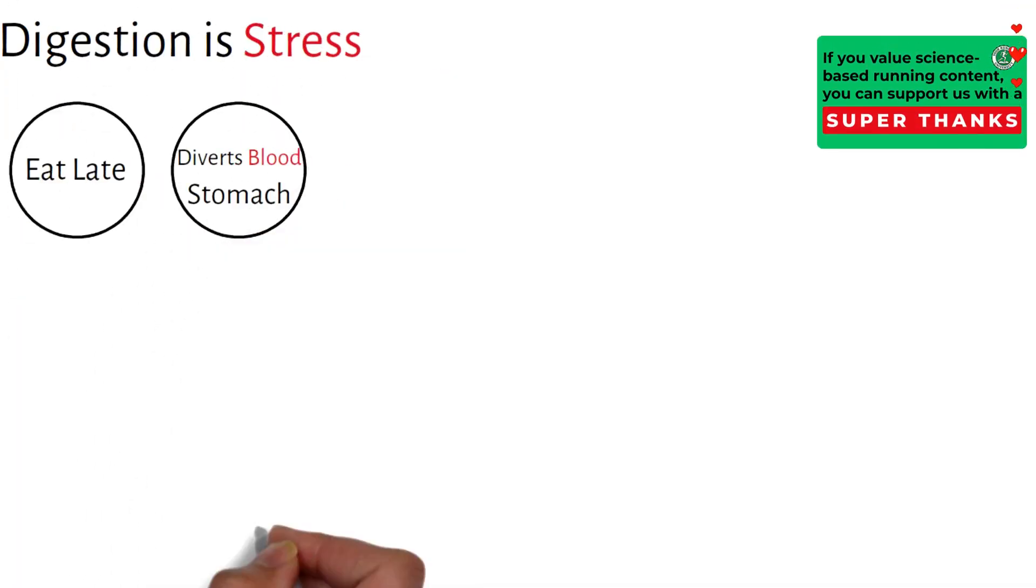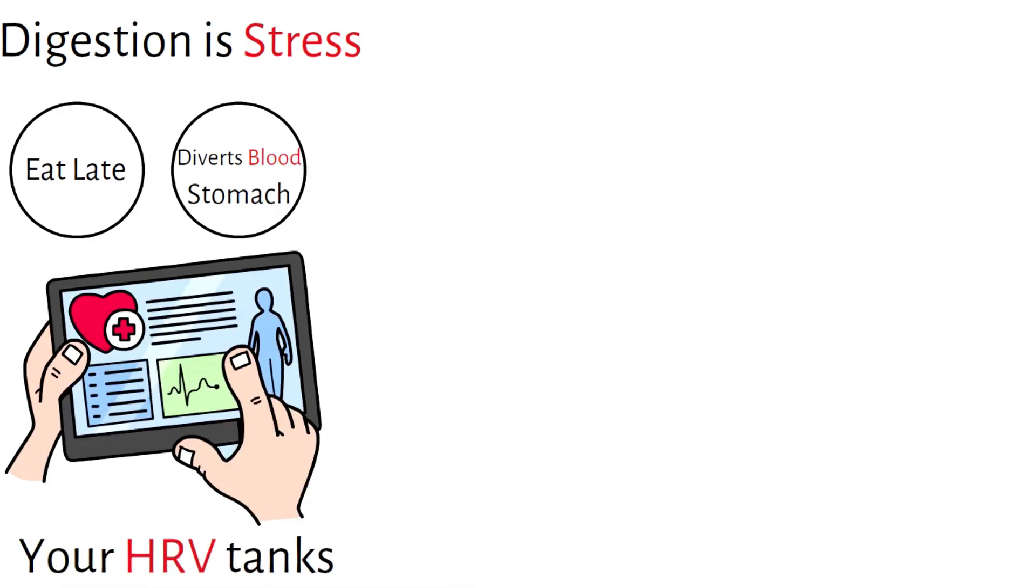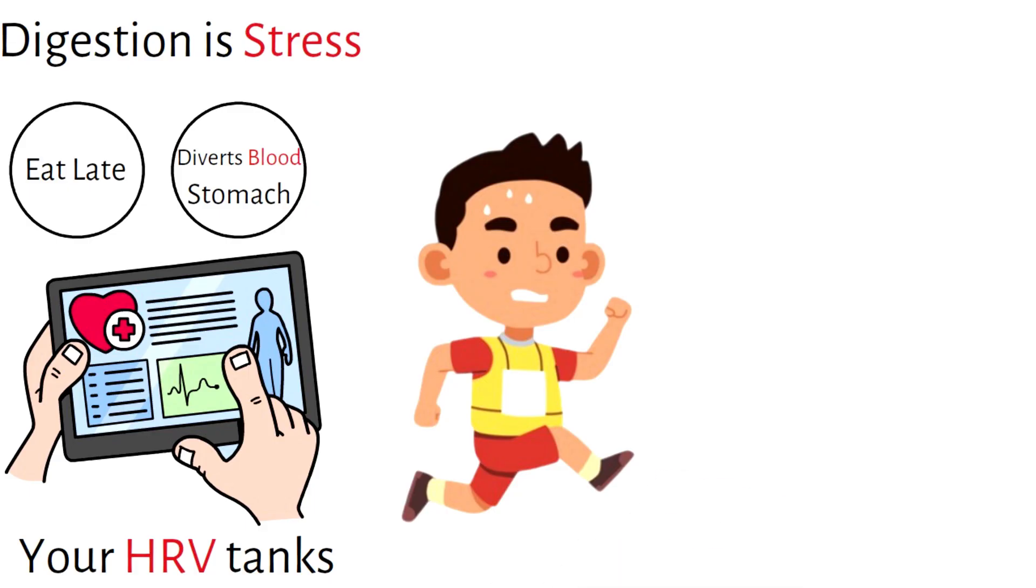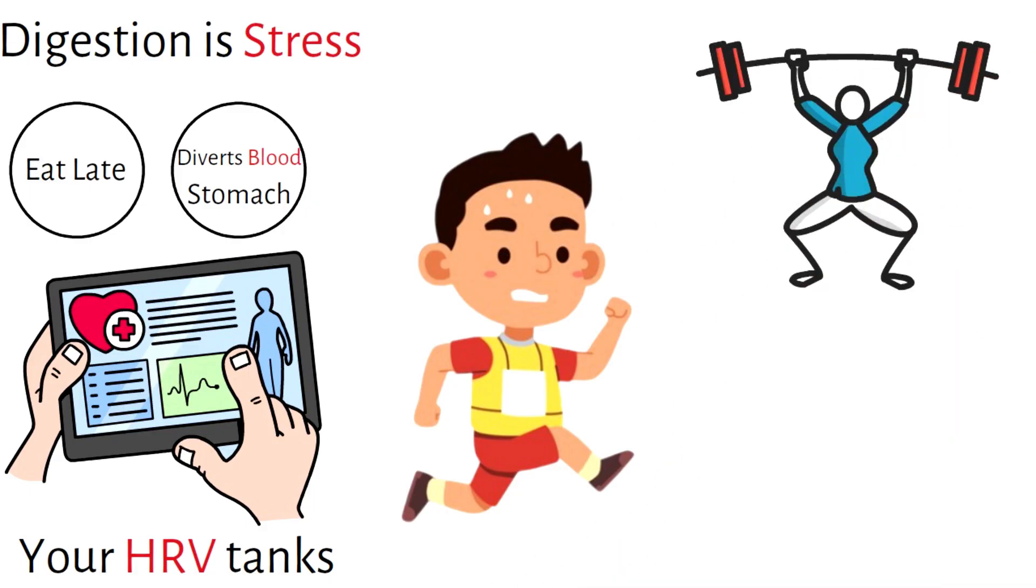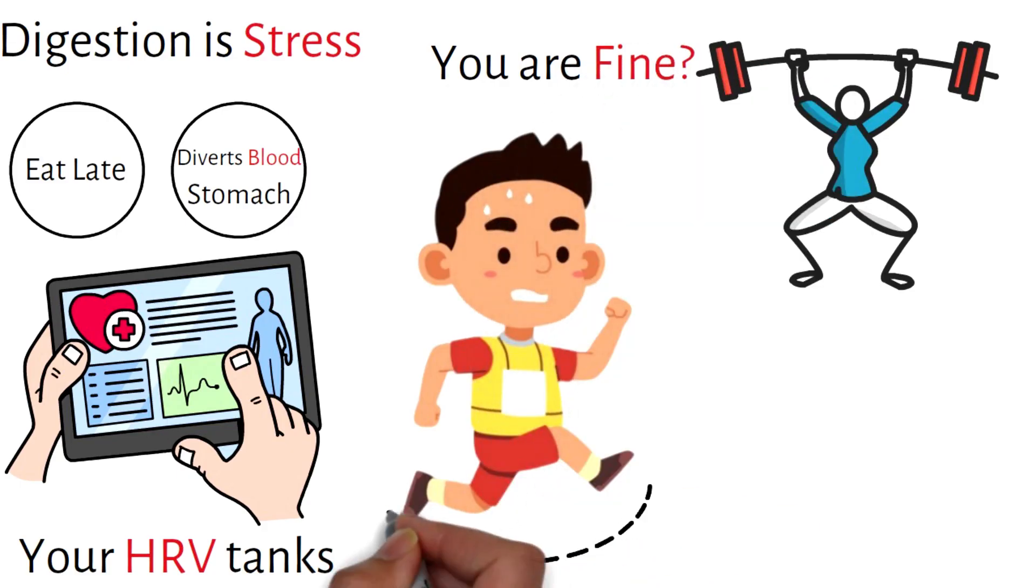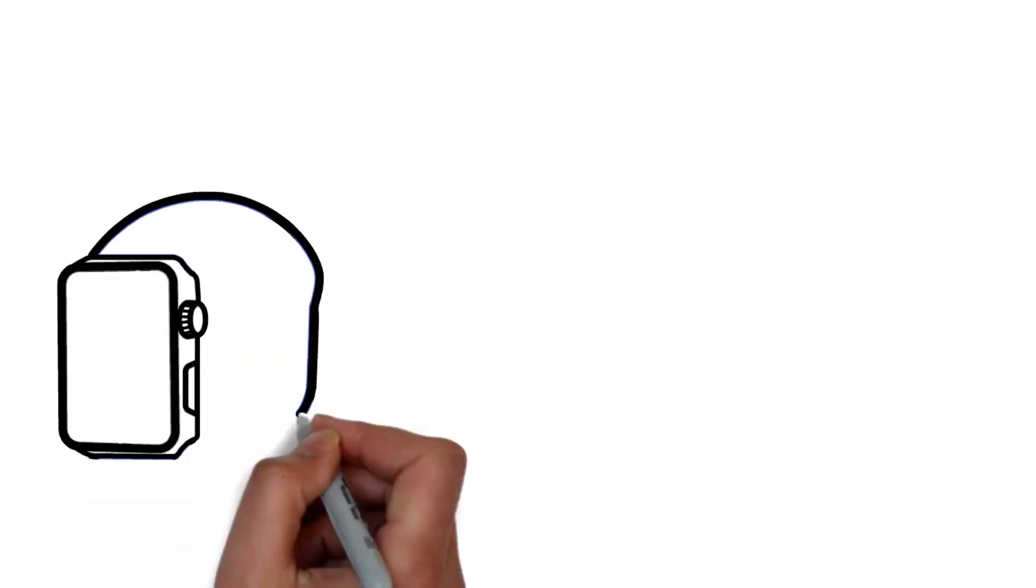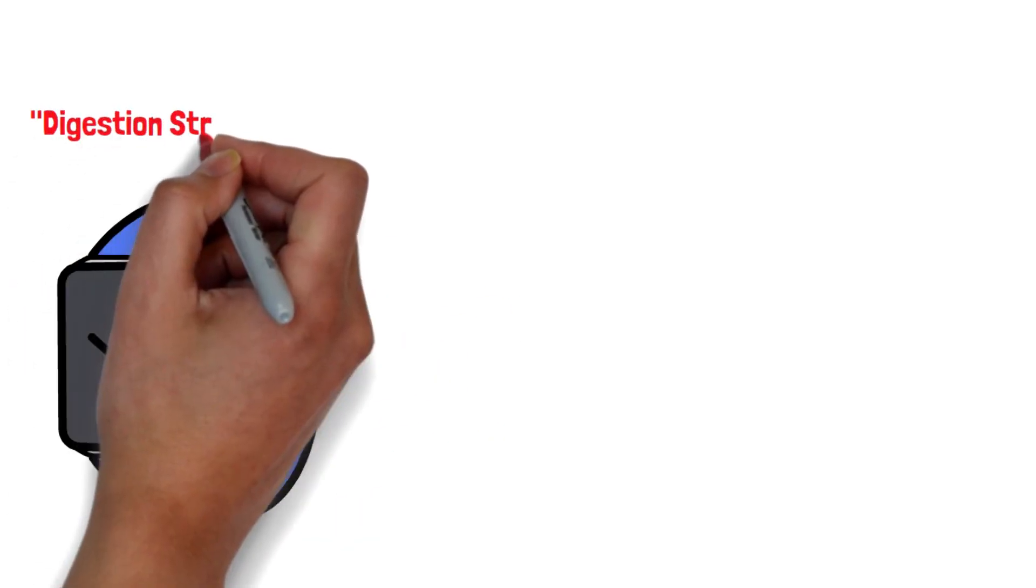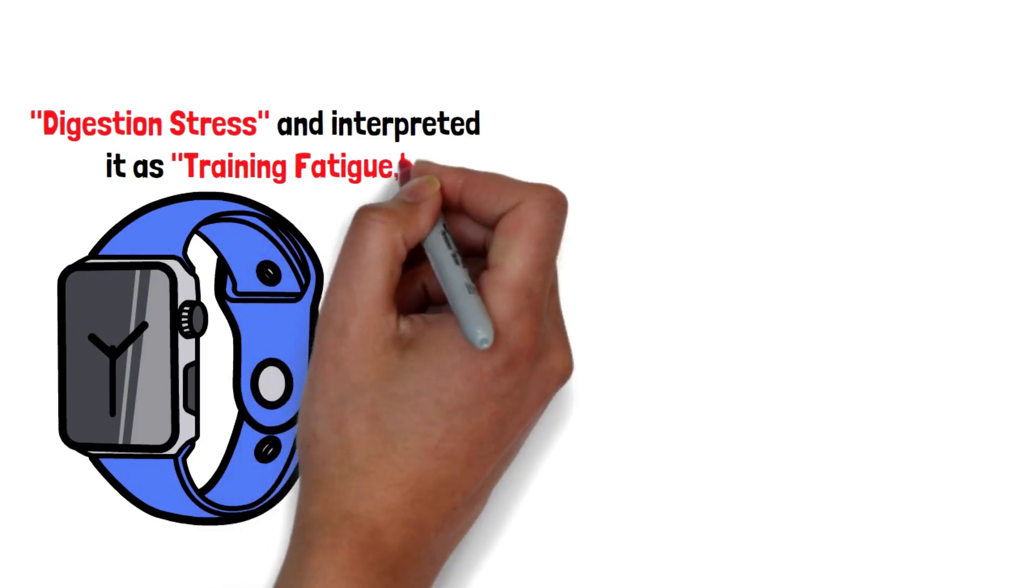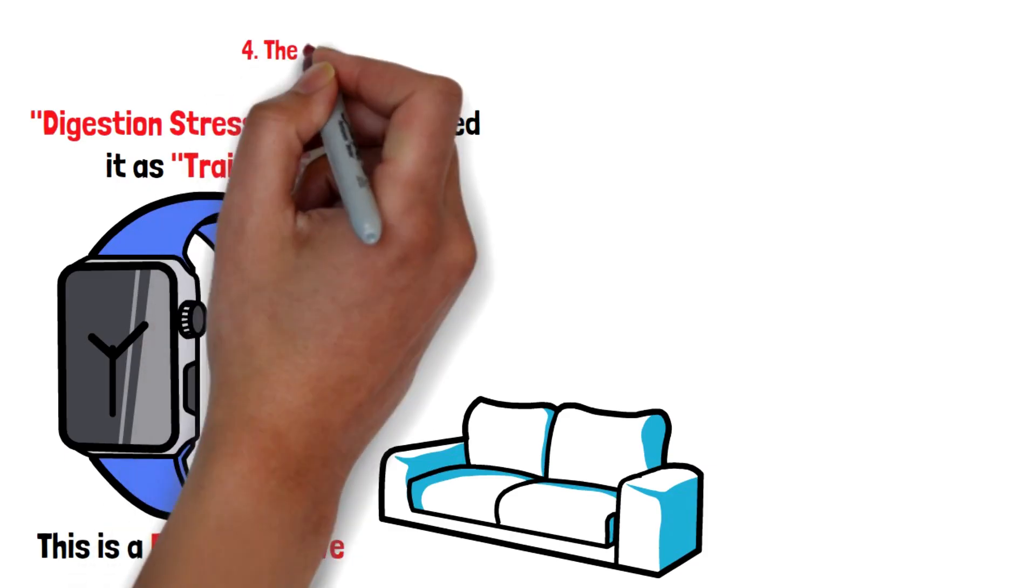Digestion is stress. When you eat late, your body diverts blood to the stomach, your heart rate rises, your HRV tanks. Biologically you are stressed, but purely from a muscular and aerobic standpoint, you are fine. Your legs are fresh, your glycogen is loaded, you should go for that run. But because the watch saw digestion stress and interpreted it as training fatigue, it told you to stay on the couch. This is a false negative.